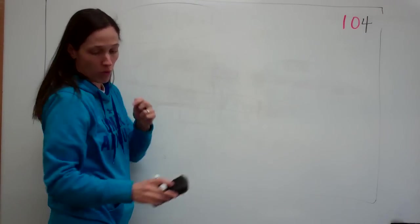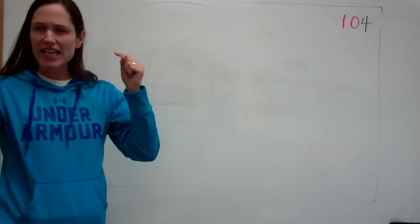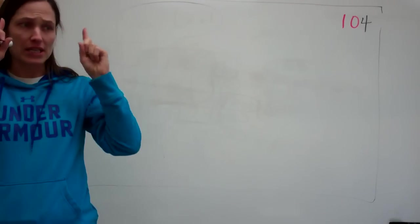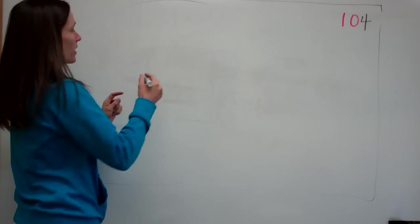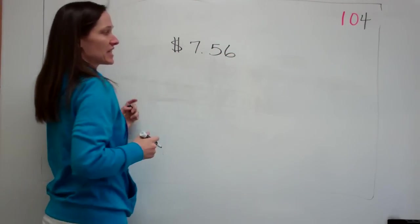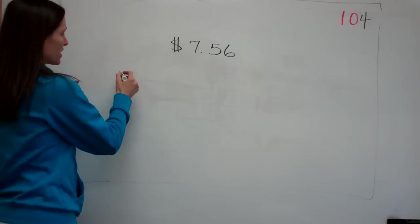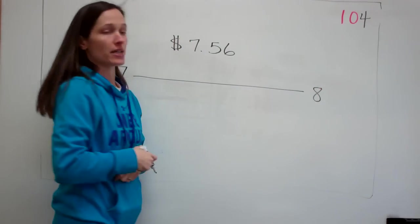Now you're going to work with decimal numbers. I think it's good to think of decimal numbers as money in the beginning. I'm going to give you a money kind of problem. If I said something was seven dollars and fifty-six cents, would you tell me that it's closer to seven or closer to eight dollars?